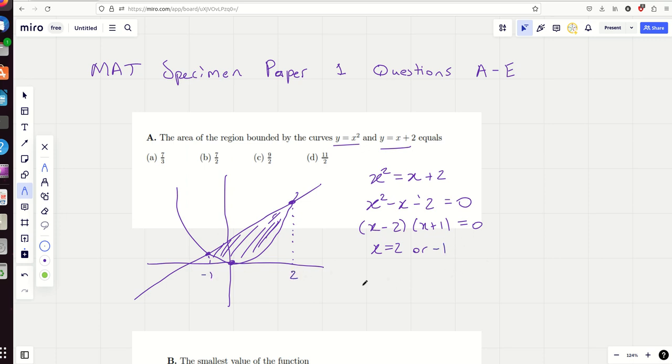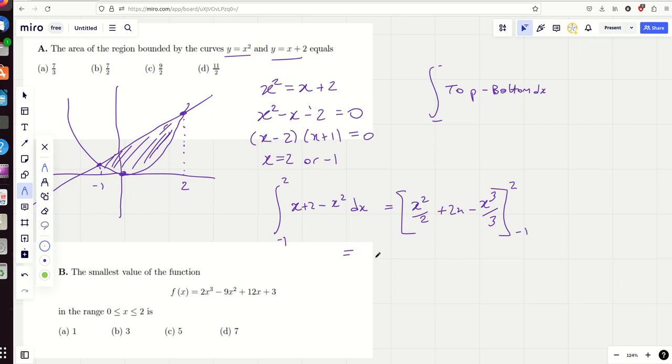So I need to integrate from -1 to 2, the top curve, which is x plus 2, minus the bottom curve, which is x squared dx. That gives me x squared over 2 plus 2x minus x cubed over 3 between 2 and minus 1. I hope you're familiar with, I call it integrate top minus bottom. Whenever you're finding a trapped area, the limits being where they intersect. I hope you're familiar with that. It's a really useful one to know. So, yeah, learn it.